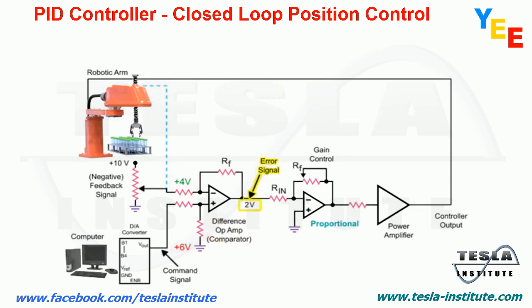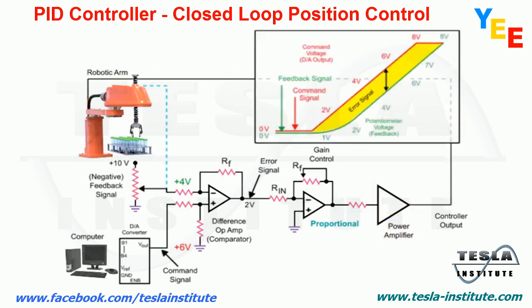The error signal is inverted by the proportional difference op-amp to a negative voltage. The voltage is then amplified and applied to the motor of the robotic arm. The robotic arm moves to the desired position until the error signal at the difference op-amp is zero.